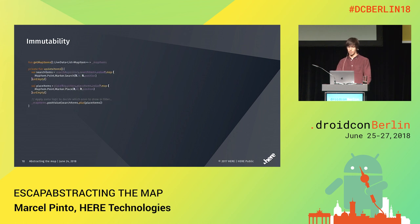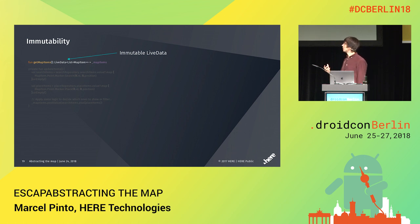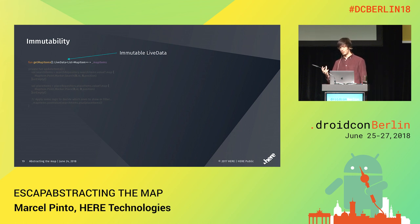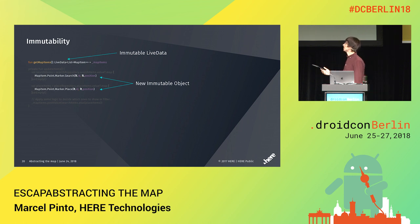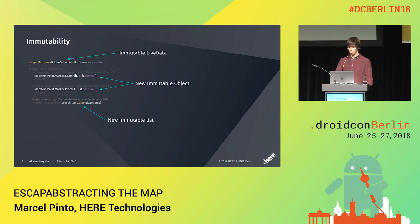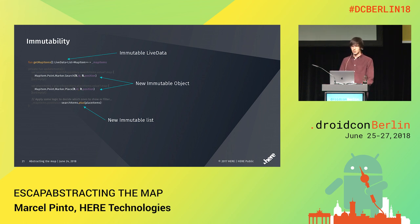Back to our example. Our ViewModel had an immutable live data — we are not exposing the mutable live data. It is private inside the class, meaning no one outside is able to modify the content of this live data. Also, every time we create a new object, we create a new immutable object that cannot be modified. Finally, we are posting into that immutable live data a new immutable list. So there is no way any other part of the code will modify that. A note: of course, every time you recreate a list and something changes, you are recreating a full list and new objects, which can lead to performance issues. So it is important to keep an eye on that and apply optimizations — but for the sake of this example, we will not go into that.